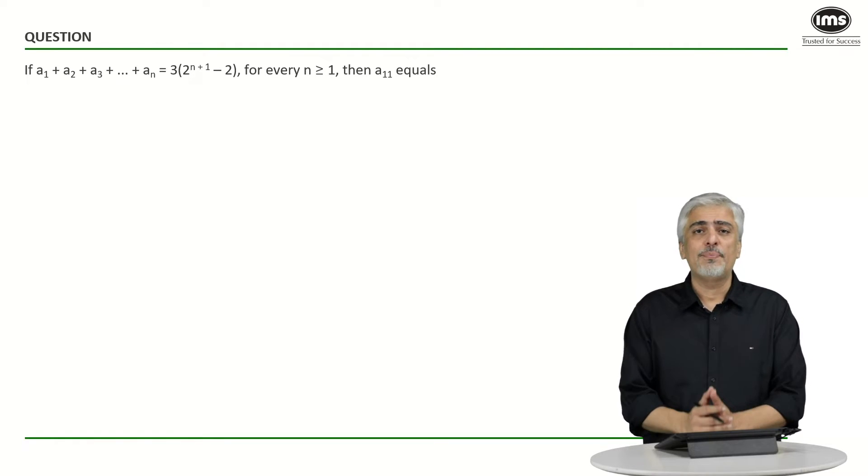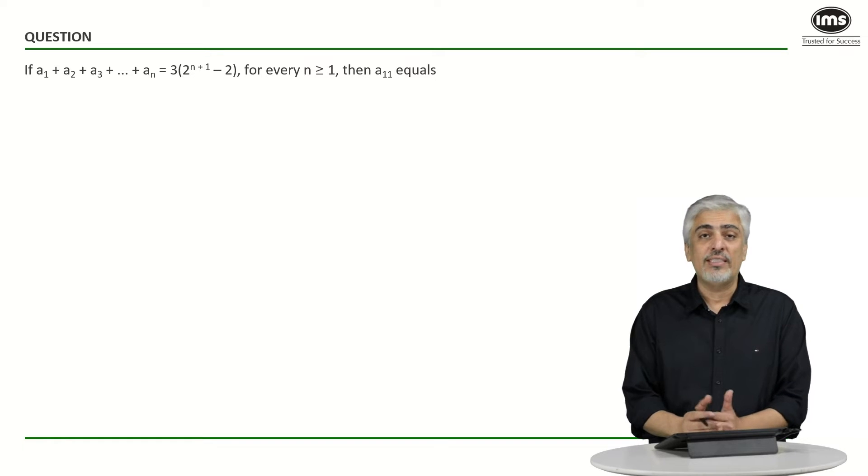Please do not forget to give the answers in the comment box. Let us have a look at this question which is a past CAT question. They have told us that a₁ + a₂ + a₃ up till aₙ is 3(2^(n+1) - 2) where n ≥ 1. Then a₁₁ equals to what? It was a theta question.